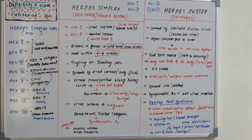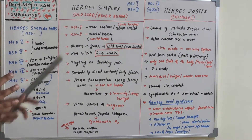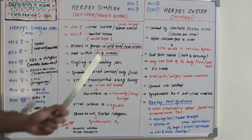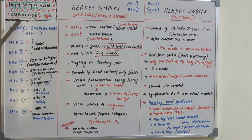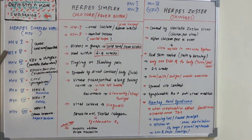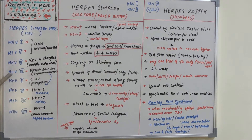Herpes viruses cause many diseases; one among them is herpes simplex and another is herpes zoster. Before moving on to these two diseases, let's see what viruses are in the herpesviridae family. The herpes simplex virus has basically eight types: herpes simplex 1, herpes simplex 2, and the others are known as human herpes virus 3, 4, 5, 6, 7, and 8.